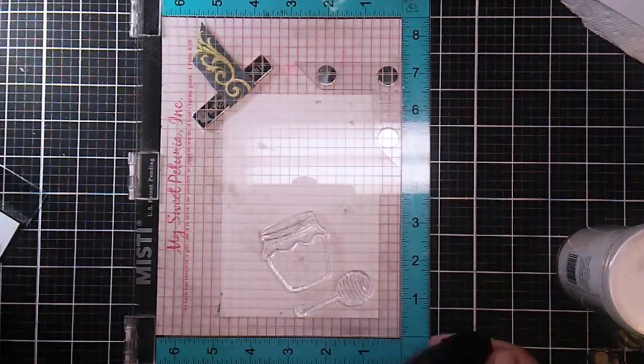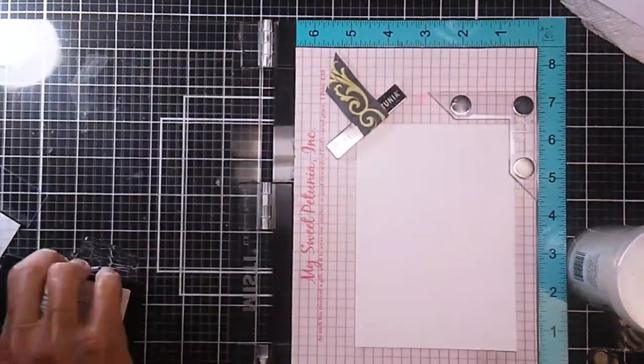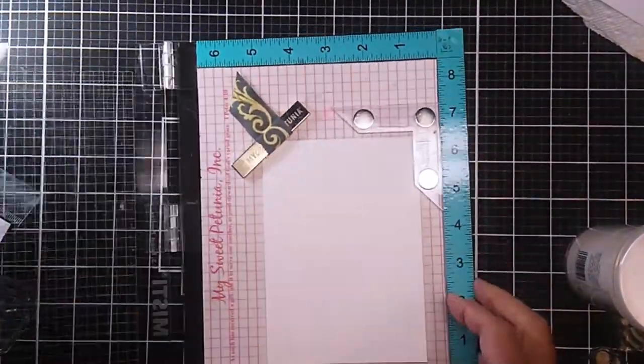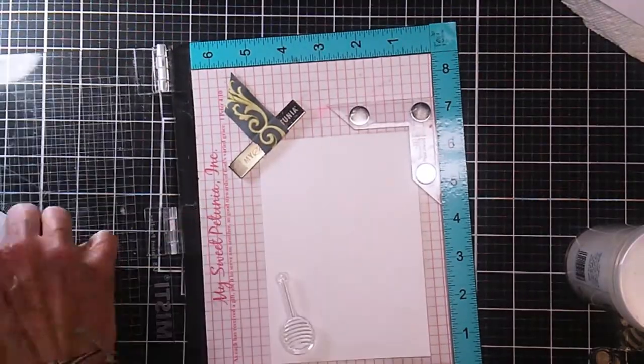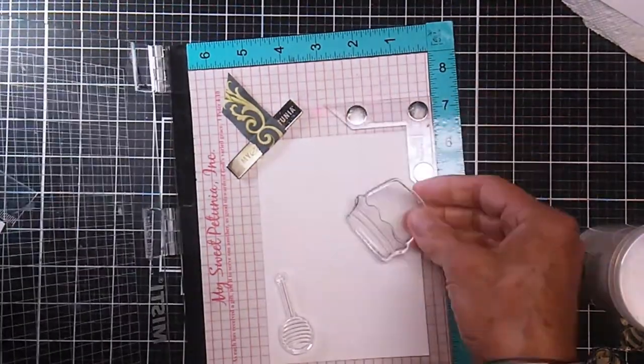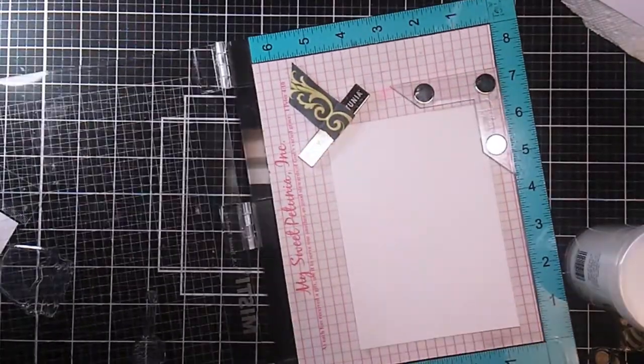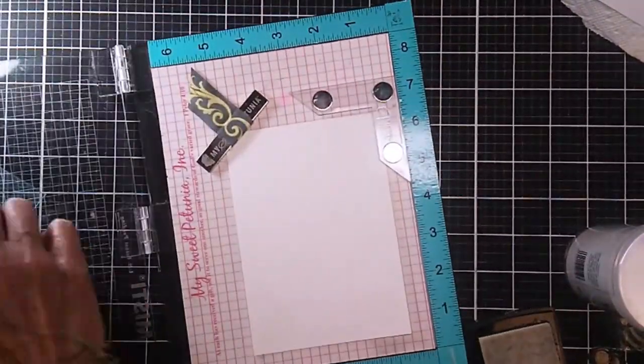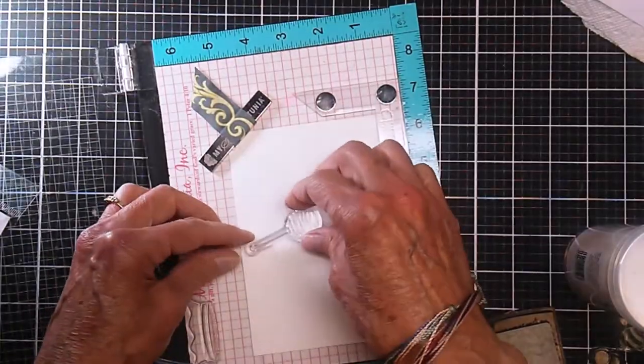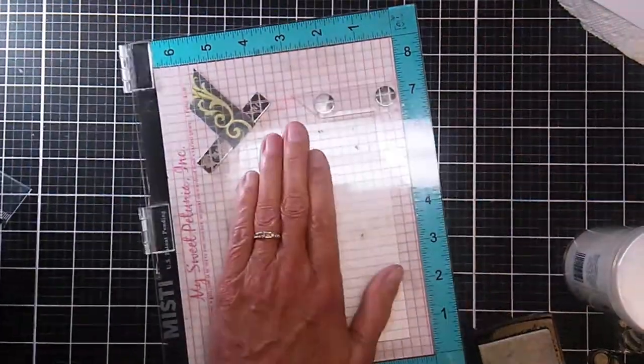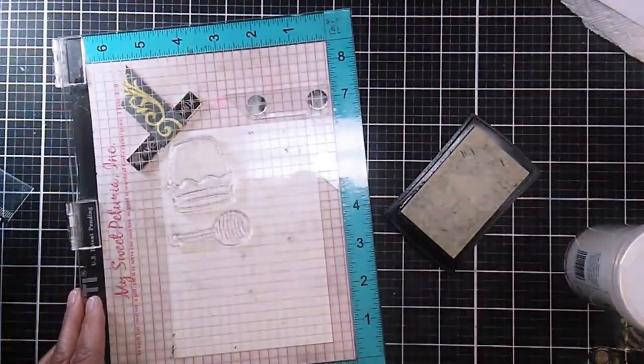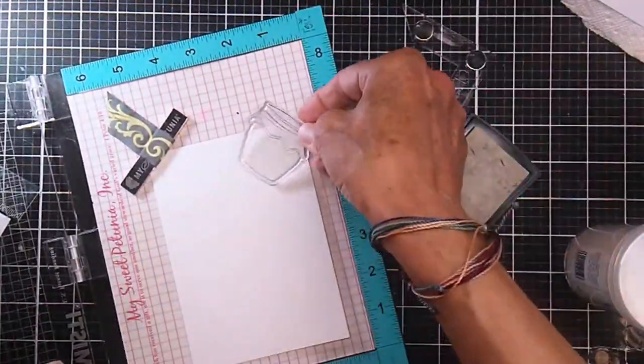I started by white heat embossing onto watercolor paper because I knew I was going to do a watercolor powder type background so that I could get the multitude of colors and the moving. At this point I am just using Versamark and stamping on watercolor paper.